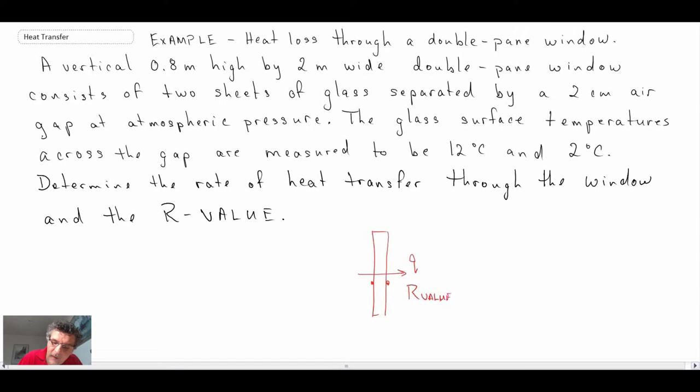So in order to solve this problem, we're told that the fluid in the window pane is air, and the gap between the two window panes is air at atmospheric pressure. Sometimes you can reduce the pressure within the gap to reduce the density, which then reduces the amount of natural convection taking place. But in this case, we're told that it is at atmospheric pressure.